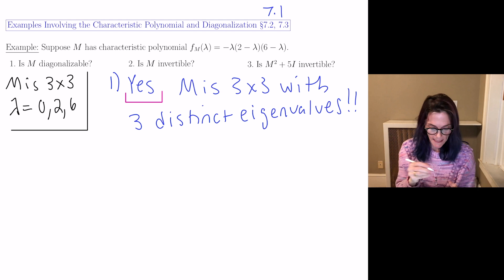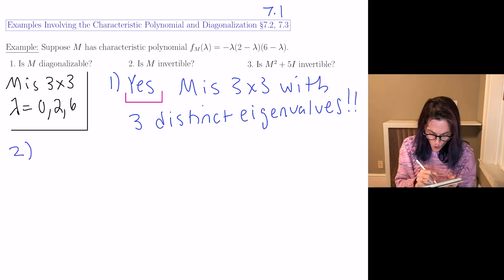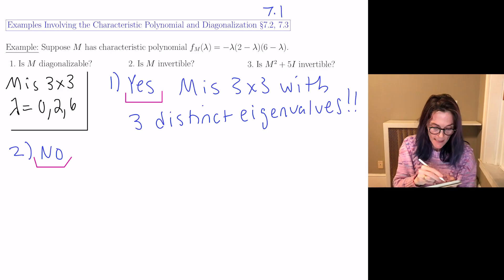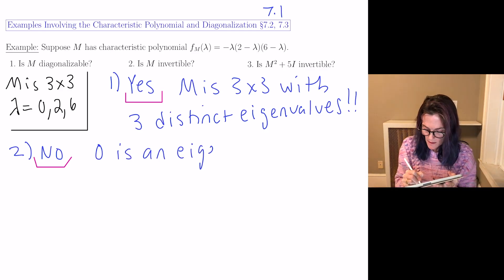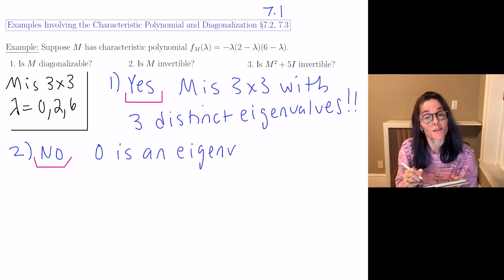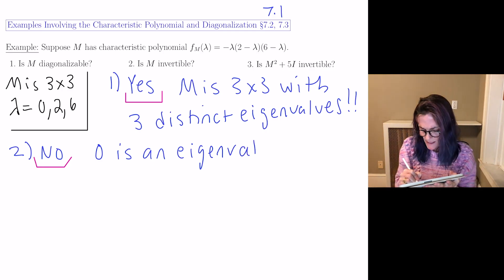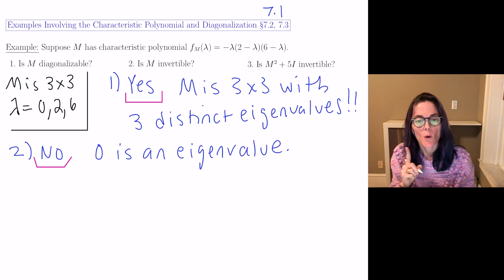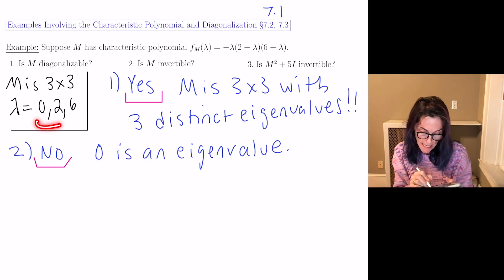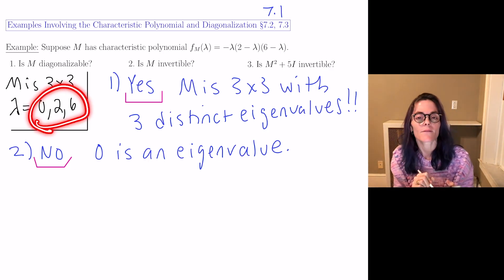Next question: is m invertible? No. The reason is that 0 is an eigenvalue — that is one characterization of a matrix that is not invertible. You could also answer this with the determinant: the determinant of m is the product of these three eigenvalues, which is 0.